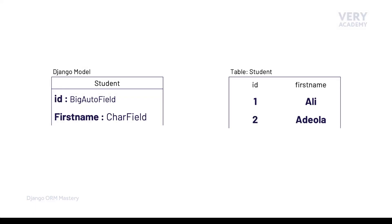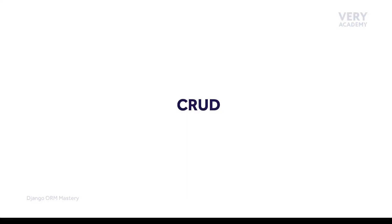It's important to remember that models represent tables in our database. Now, we have a set of Django models and a set of tables — so we need to perform operations and queries on our database. Typical tasks include creating, returning, updating, and deleting data from our database, commonly known as CRUD operations.